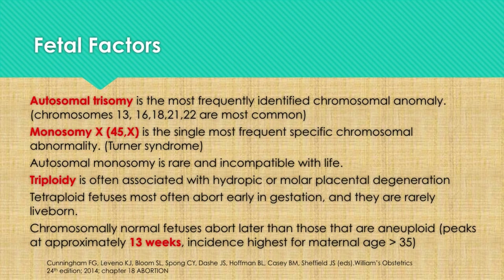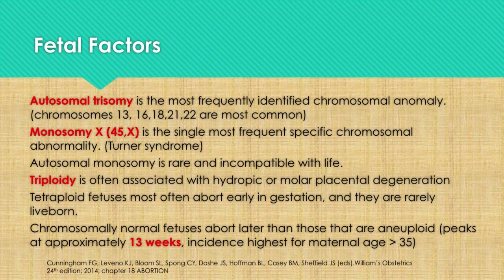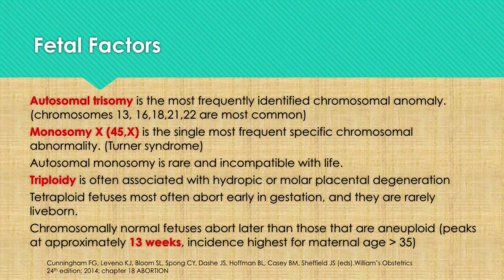Autosomal trisomy is the most frequently identified chromosomal abnormality. Monosomy X or 45X is the single most frequent specific chromosomal abnormality. Autosomal monosomy is rare and incompatible with life. Triploidy is often associated with hydropic or molar placental degeneration. Tetraploid fetuses most often abort early in gestation and are rarely live-born. Chromosomally normal fetuses abort later than those that are aneuploid.